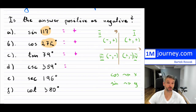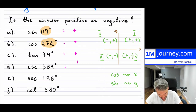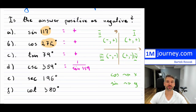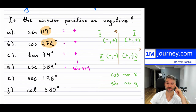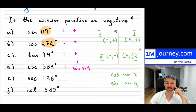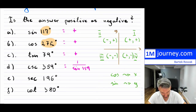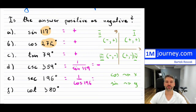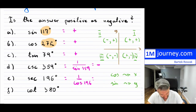Cosecant — what is that? It's simply the reciprocal of sine. So cosecant of 359 is one over sine of 359. The sign doesn't change, so really you're asking: is sine of 359 positive or negative? 359 degrees is in the fourth quadrant — just one degree below the axis — so sine, which is the y-value, is negative. Therefore cosecant of 359 is negative. Now secant is one over cosine of 196. Since 196 is 180 plus 16, it's in the third quadrant, so cosine is negative — therefore secant of 196 is negative.